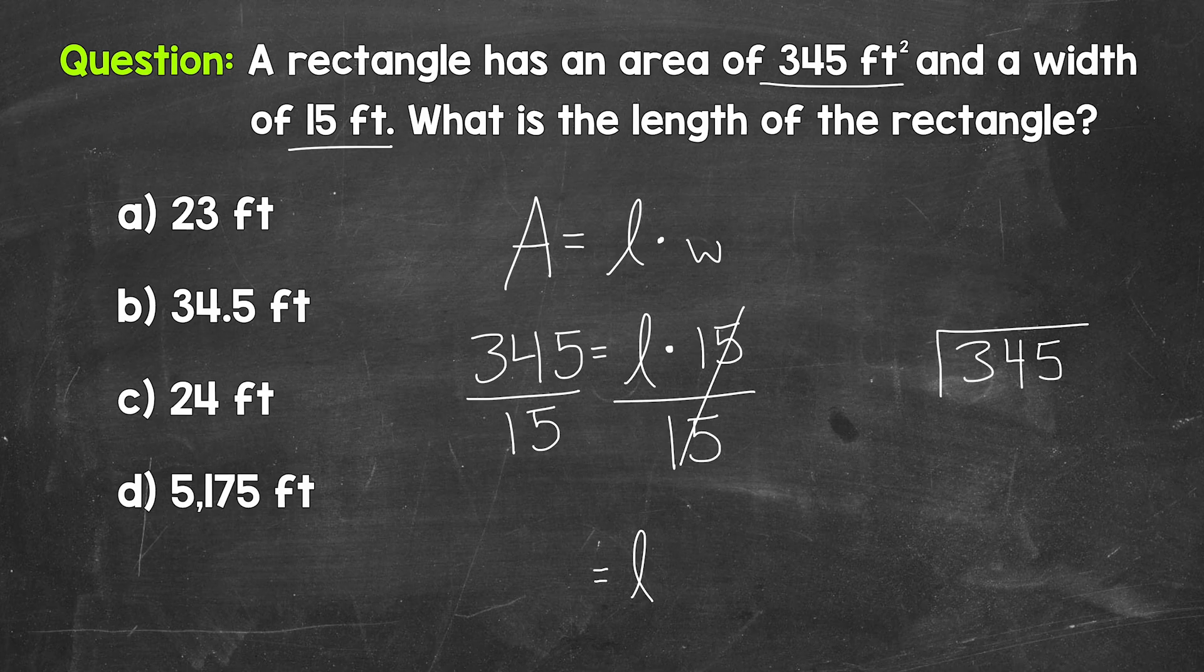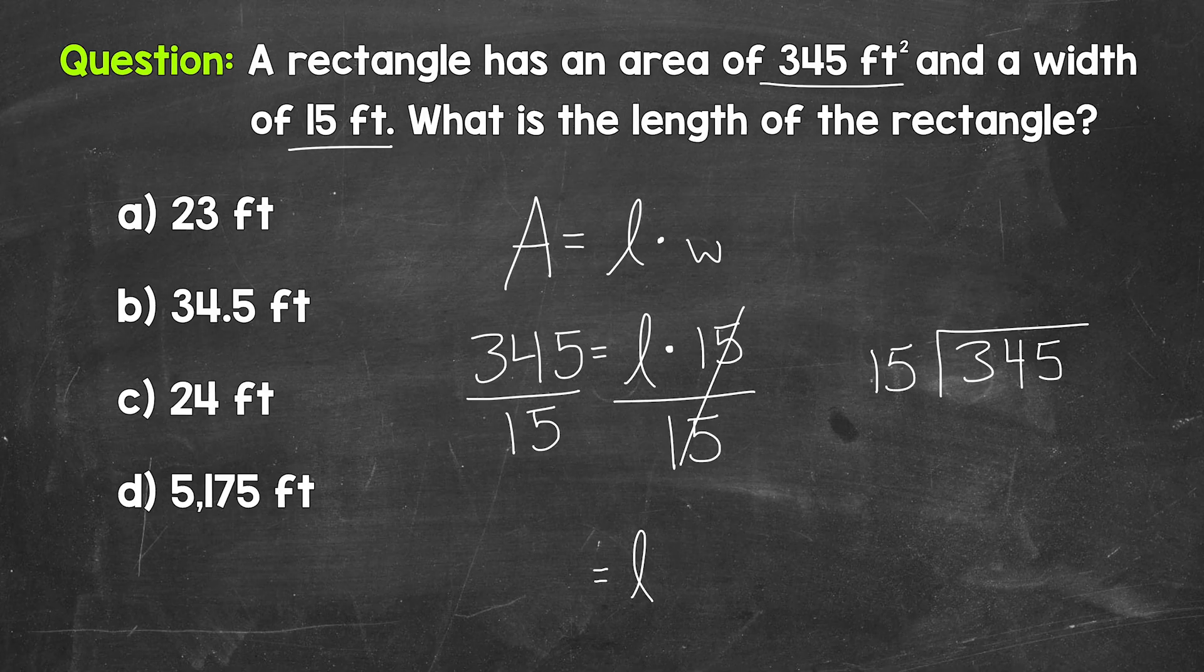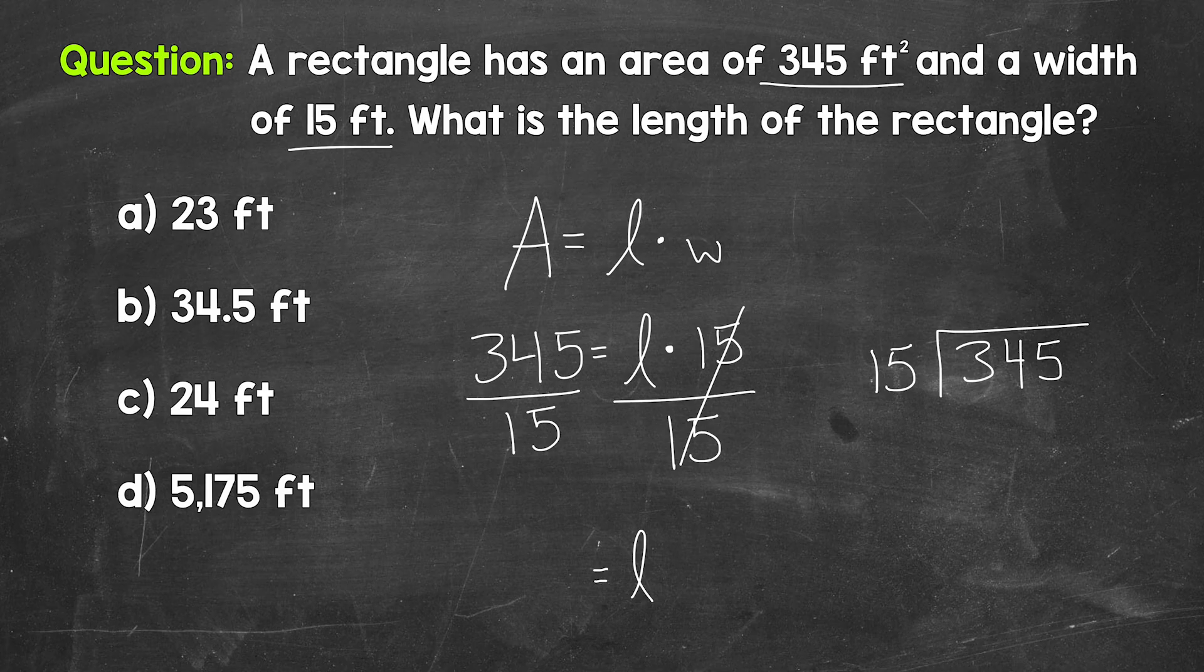So 345 divided by 15. So we'll start with 3 divided by 15, which we can't do. So we move over to the 4. And we have 34 divided by 15. So how many whole groups of 15 in 34? How many 15s in 34? Well, 2. That gets us to 30.